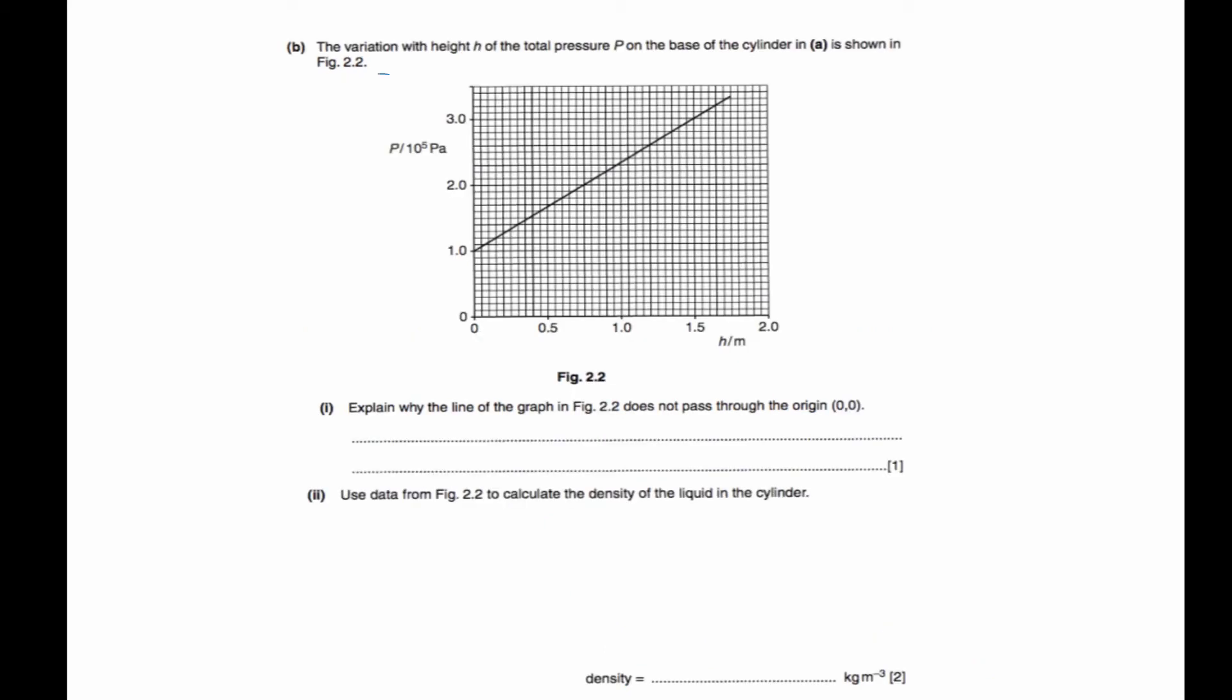Next part, they say the variation with height h of the total pressure at the base of the cylinder is shown. So this is the graph of total pressure—you notice they use the word total pressure acting on the base of the cylinder. So you must understand when they say total pressure, you will notice something that the area A here has this column of liquid here as well as atmospheric pressure above it. So it makes sense that the pressure here—you must get the total pressure here by taking hρg plus atmospheric pressure. So to answer the question why it does not pass through the origin, you just have to mention that there is atmospheric pressure as well.